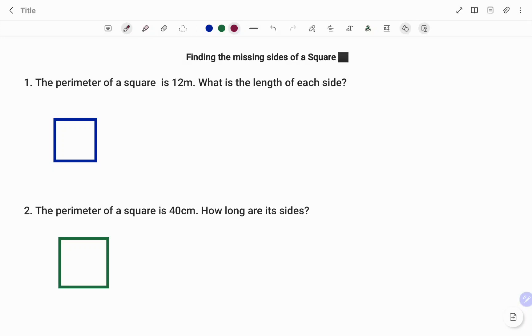Hi everyone, this is your Math Guru. In this video, I'm going to show you how to find the missing sides of a square if only the perimeter is given. The first question says, the perimeter of a square is 12 meters, what is the length of each side?